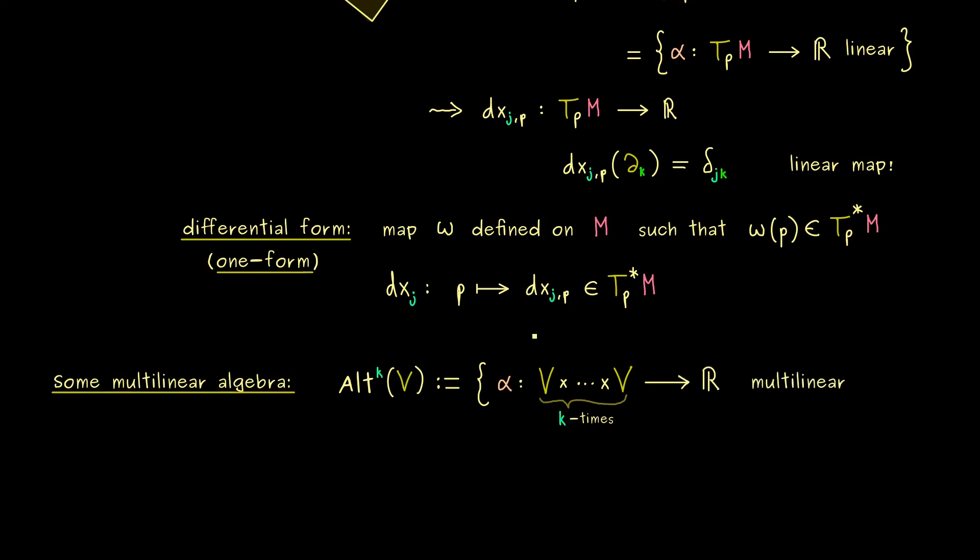However, now the domain is given by the Cartesian product of the vector spaces V, and there comes the k in, because we have k of them here. On the other hand, the codomain of alpha is still the same. We still map into the real number line. And now the important property this map alpha should have is that it is multilinear. In short, we would also say it's a k-linear map, because we have exactly k inputs for the Cartesian product here.